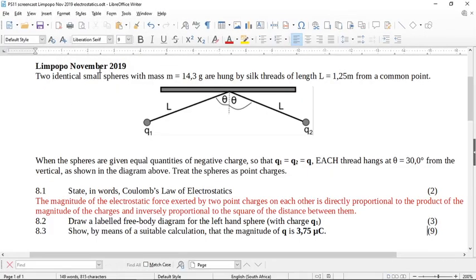Okay, I want to look at this question from Limpopo 2019 November. This question is actually very similar to a matric question that came in the matric trial exam in the same year. I've seen more than a few of these that use this concept, so I want you to have a good look at this. It says two identical small spheres with mass m equals 14.3 grams are hung by silk threads of length L equals 1.25 meters from a common point.